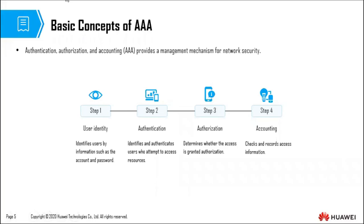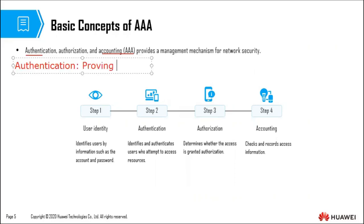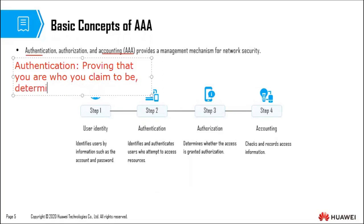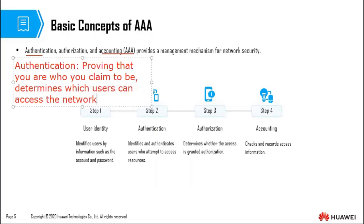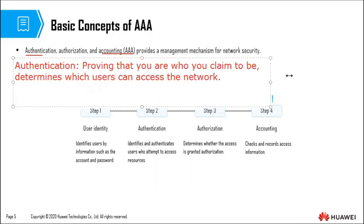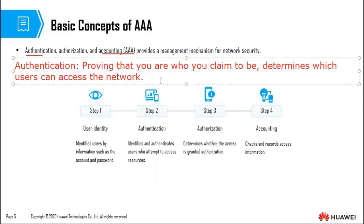AAA stands for authentication, authorization, and accounting. It provides a management mechanism for network security. Authentication is proving that you are who you claim to be — this determines which users can access the network. Normally, authentication is done using things like username or password, or any other unique attribute that can be used to identify a person, for example, biometrics.